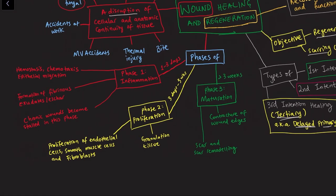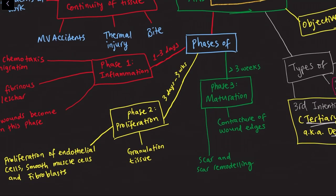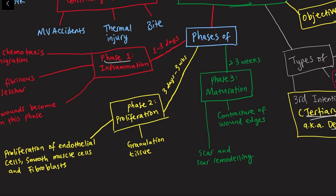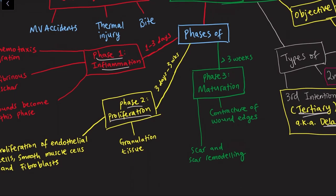Now let's look at the phases of wound healing. Phase one is the inflammatory phase, lasting one to three days. Phase two is the proliferation phase, lasting from three days to three weeks. Phase three is the maturation phase, occurring after three weeks. These phases happen in sequence during wound healing.